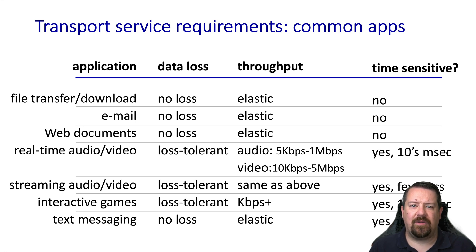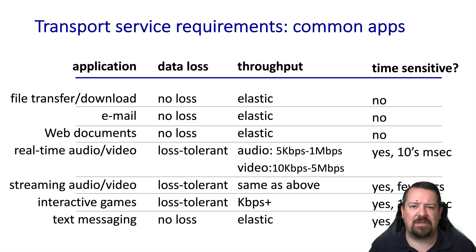Looking at common applications, a file download is relatively elastic on throughput and does not have a tight latency bound; however, it cannot accept any loss — the file received must be exactly correct bit-for-bit compared to the one sent. Email has similar service requirements. Real-time audio and video are considerably different — they are generally loss-tolerant, and loss manifests as a small amount of corruption in the audio or video that the user will generally not notice as long as the loss rate isn't too high.